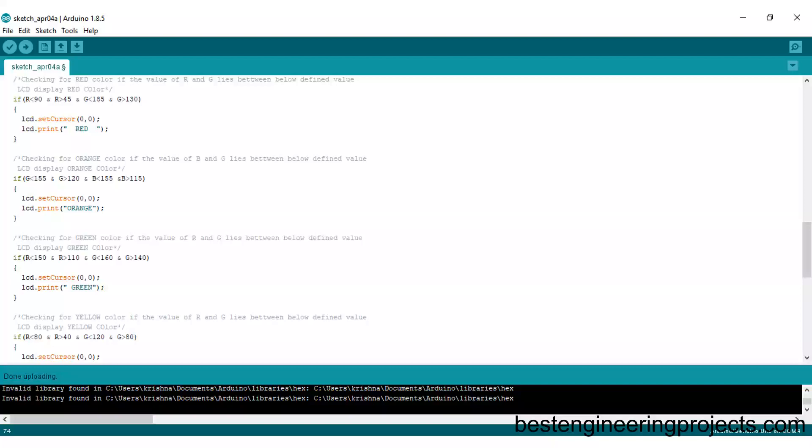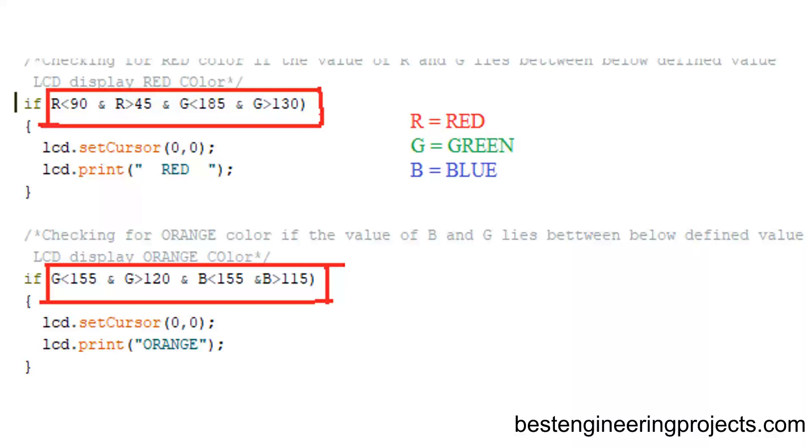That is, the total number of if sections must be equal to the total number of colors you are going to detect. You can see that I am comparing two different color frequencies in order to detect one color. Let's say for red, I am comparing red color frequency and green color frequency. For orange, I am comparing green color frequency and blue color frequency, and so on. Update the value of the if function with the measured values.